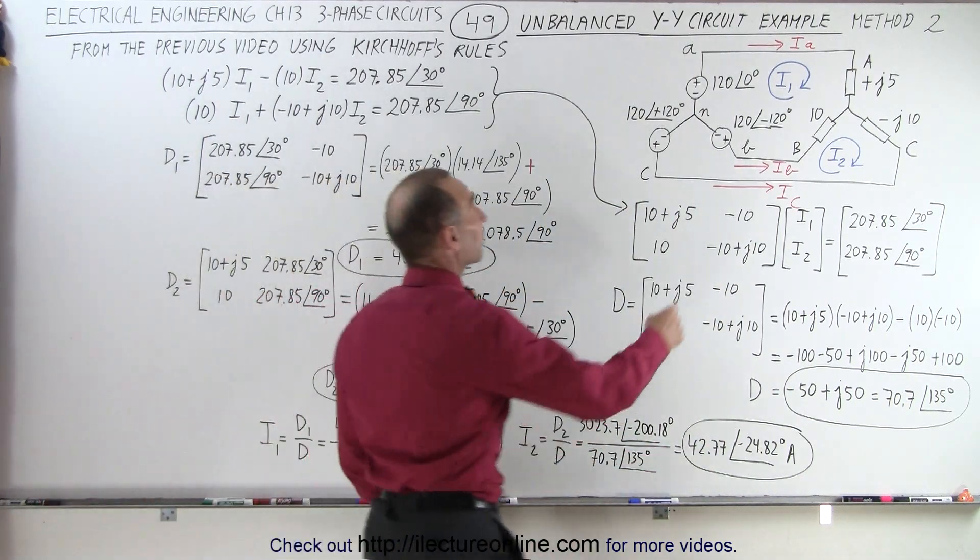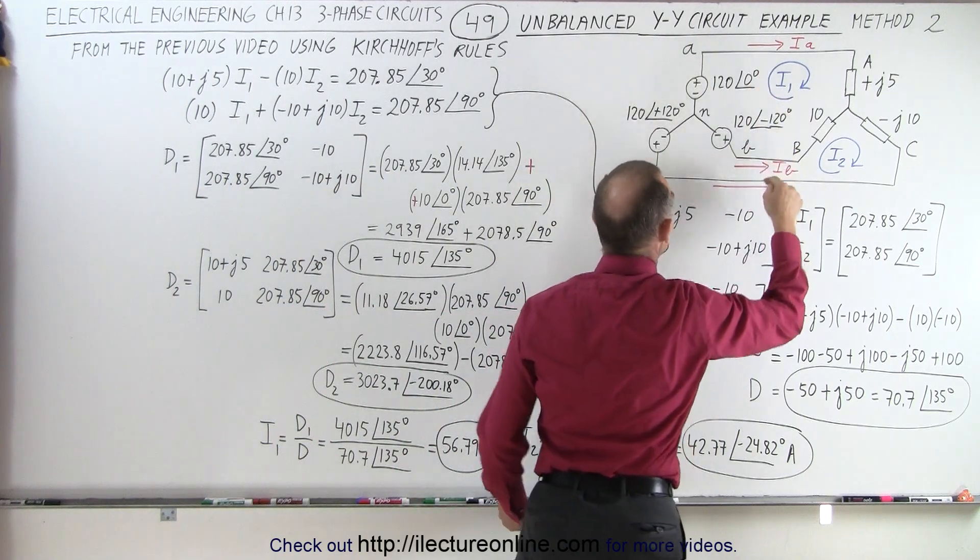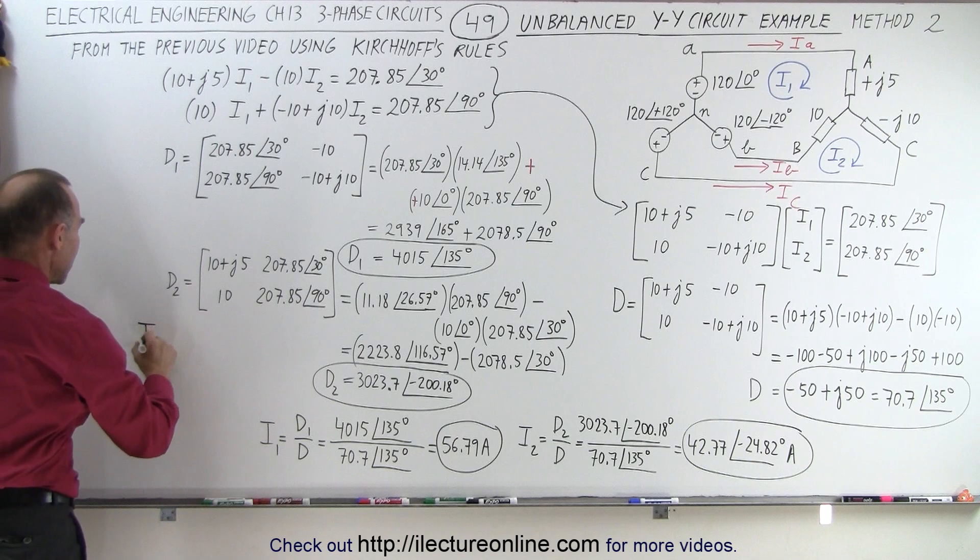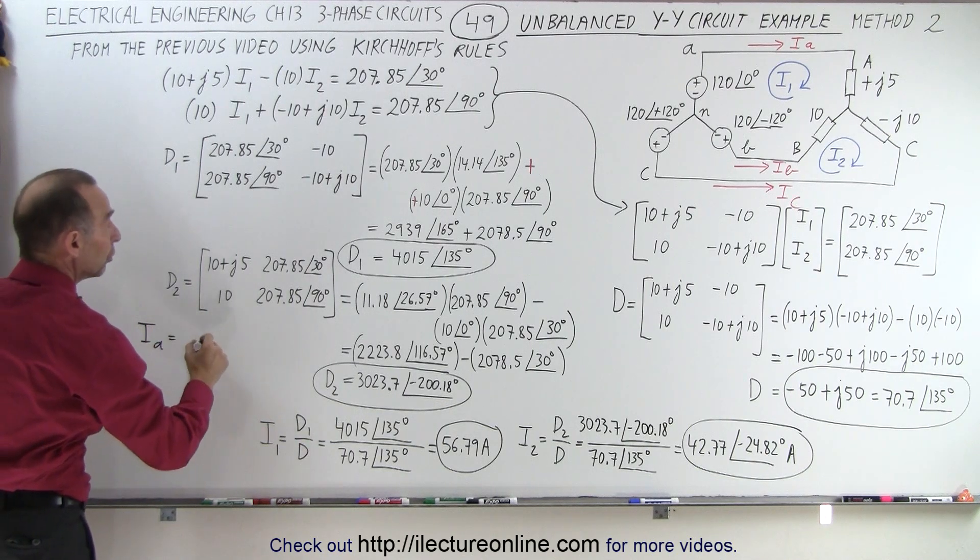And finally, to find the line currents Ia, Ib and Ic, we use the following relationship that Ia is equal to I1.